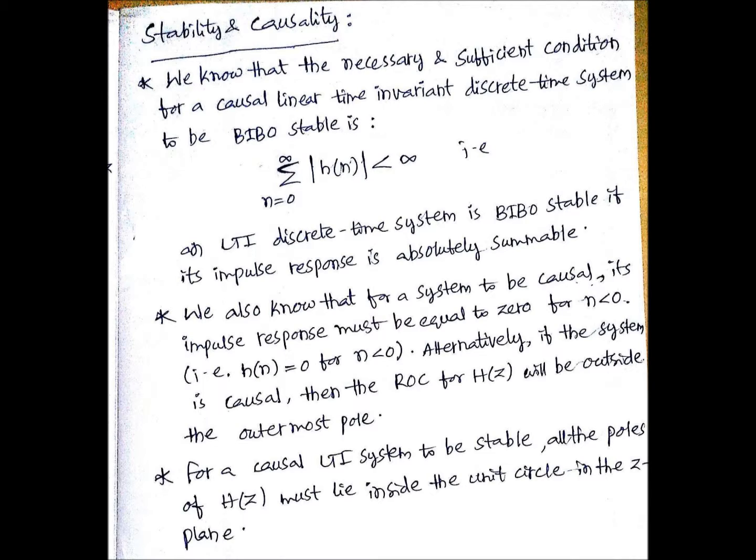Here we'll discuss stability and causality by considering the Z transforms. The necessary and sufficient condition for a causal linear time invariant discrete time system to be BIBO stable is that the sum from n equals 0 to infinity of the modulus of h(n) must be less than infinity.